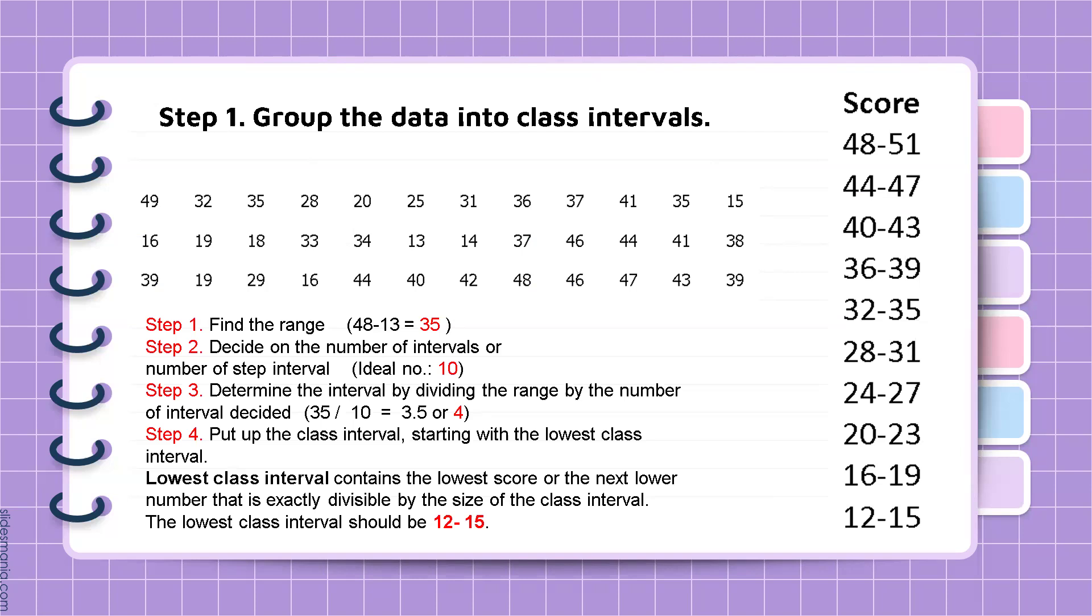Then, we decide on the number of intervals or number of step interval. So the minimum that we can use is 7 and the maximum is 20, while the ideal number is 10. So we make use of the ideal number 10.